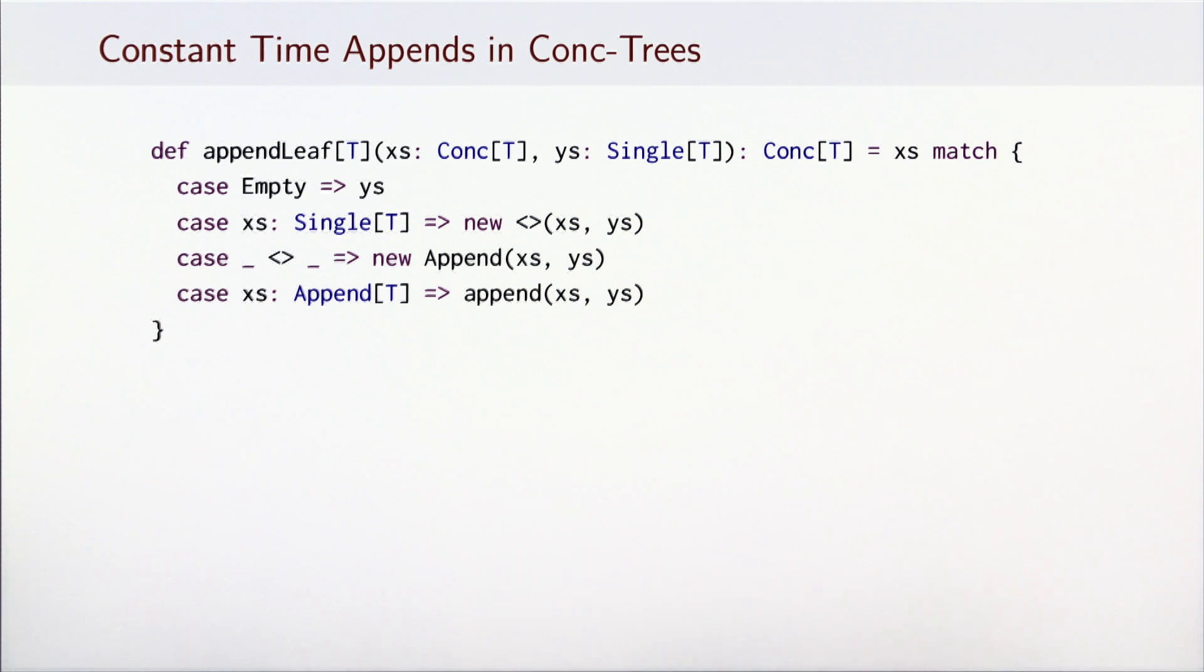Using this idea, let's reimplement the append-leaf method, which this time appends the single tree ys to the tree xs. This method first pattern matches on xs to handle the trivial cases. When the first tree is empty, it just returns ys. When it gets two single trees, it just links them together. Or links an inner node and ys into an Append node. If the tree xs is already an Append node to start with, the work is delegated to the recursive append method.